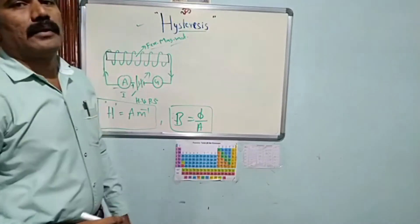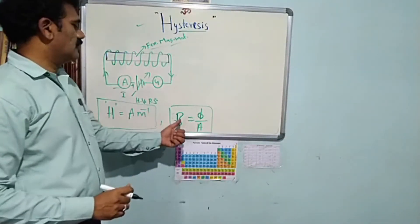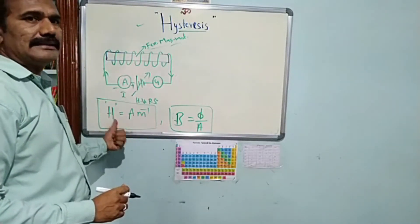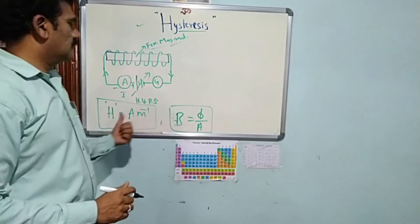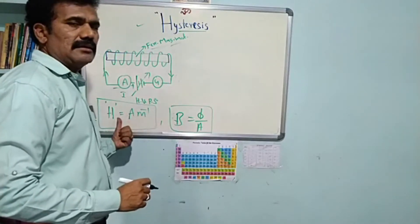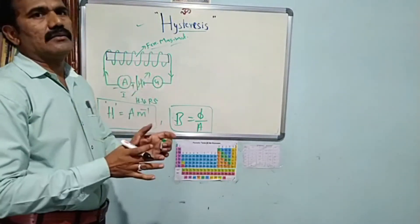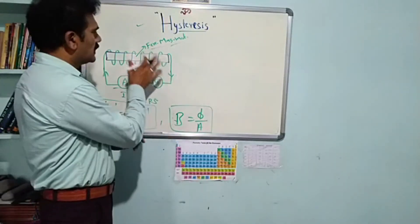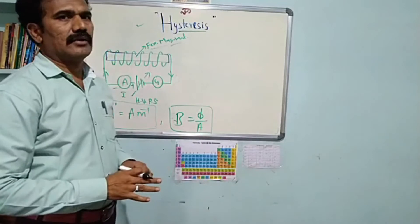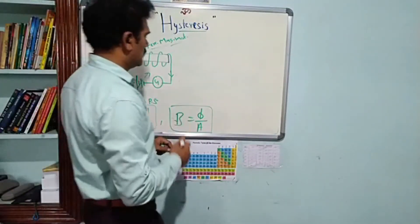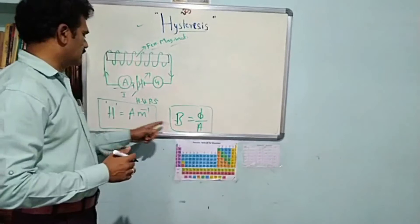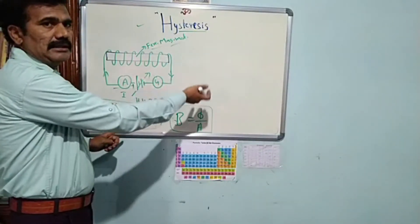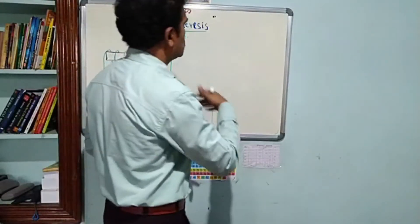We plot the variation of the measured magnetic flux density B with respect to the applied magnetic field intensity H. This variation between B and H is called the BH curve, and the BH curve represents how hysteresis is studied for a given ferromagnetic material. We consider the whole magnetization and demagnetization cycle.